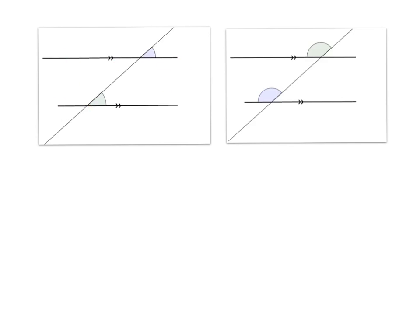For example, lines like that aren't parallel lines because they're not exactly the same distance apart from each other all the time. In fact, they get wider and wider apart, whereas the parallel lines stay the same distance apart. So that's our first thing we need: the parallel lines staying the same distance apart.